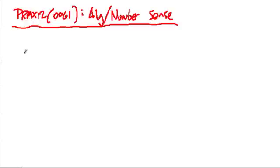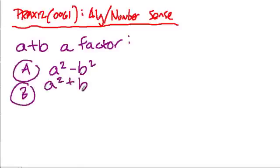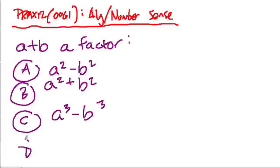The first one says for which of the following expressions is a plus b a factor? They're going to give you a bunch of expressions. Expression A is a squared minus b squared, B is a squared plus b squared, C is a cubed minus b cubed, and D is a cubed plus b cubed.